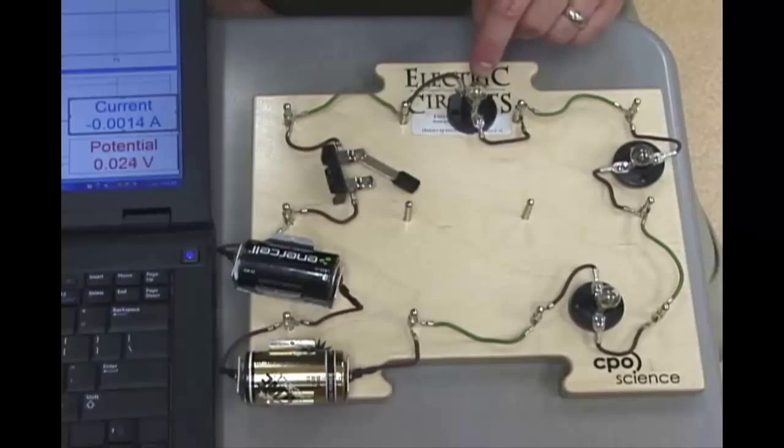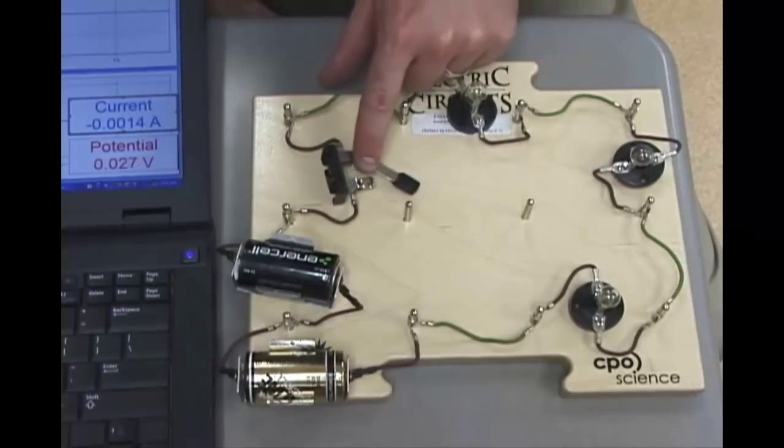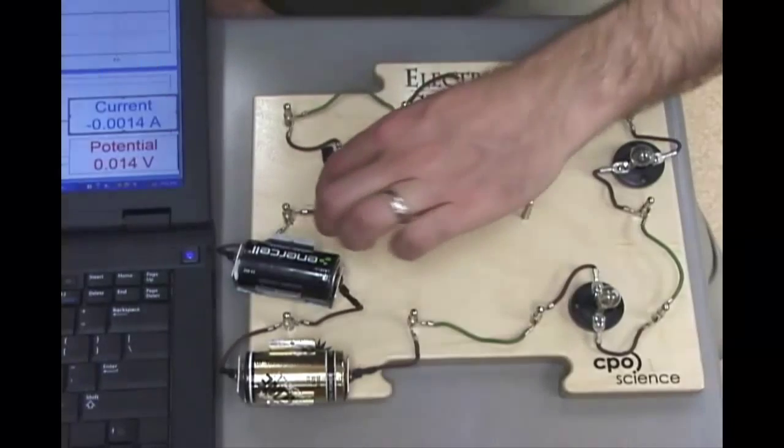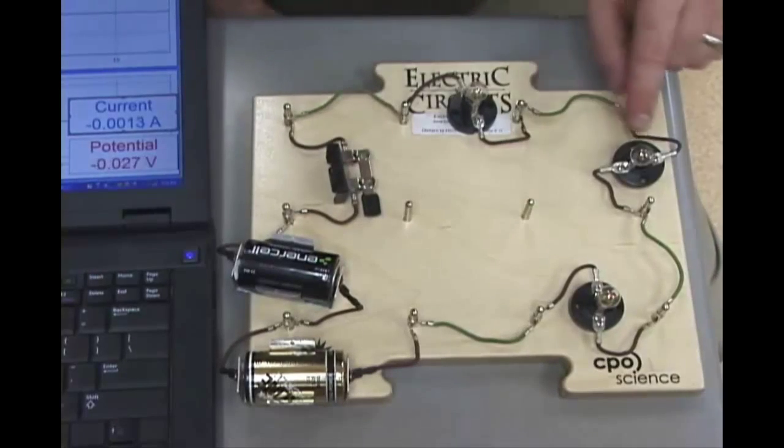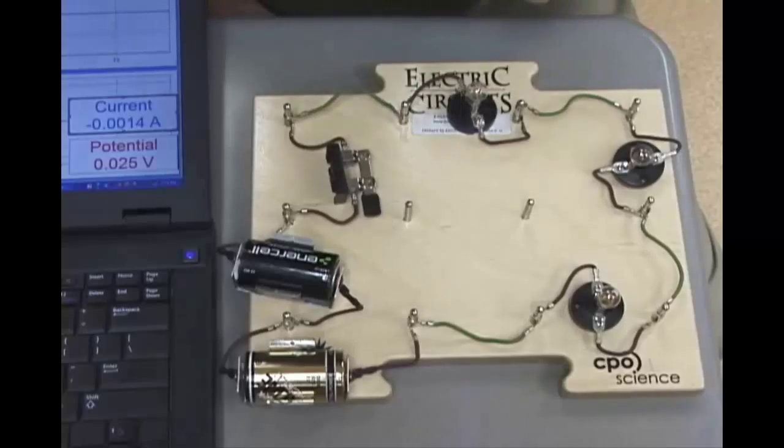But wait a minute, why aren't the light bulbs lit? Because we have an open circuit as well. As soon as we close the switch, we see that the light bulbs are really faintly lit, which is good.